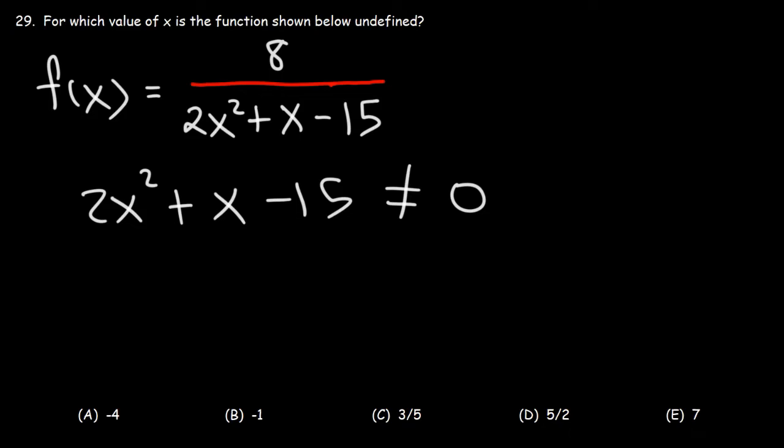So let's factor this expression. To factor it, we're going to multiply the leading coefficient by the constant term. So 2 times negative 15 is negative 30. We need two numbers that multiply to negative 30 but add to the middle coefficient 1.